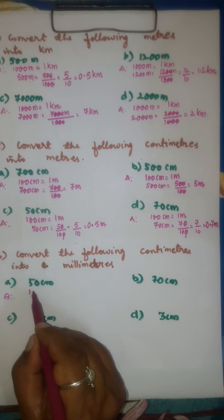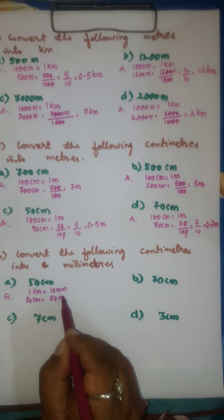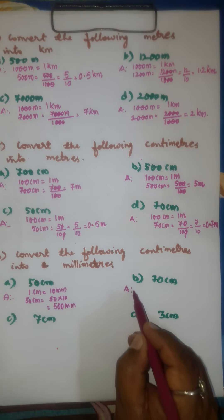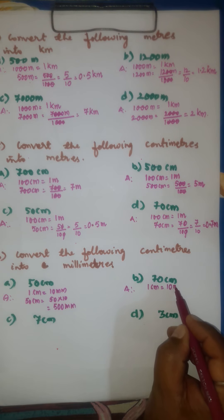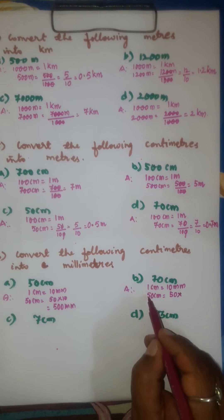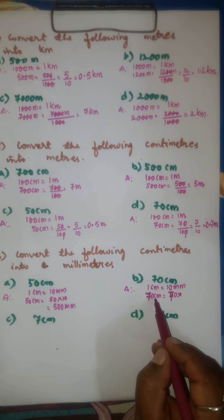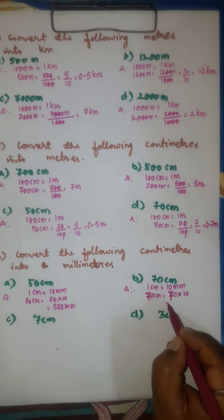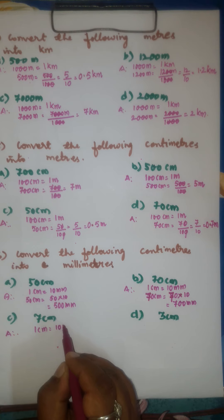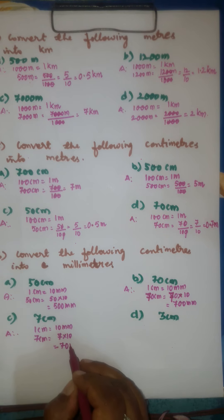Now converting centimeters to millimeters: we know that 1 centimeter is equal to 10 millimeters. Therefore, 50 centimeters is equal to 50 into 10, that is 500 millimeters. For the second one, 70 centimeters is equal to 70 into 10, that is 700 millimeters. And 7 centimeters is equal to 7 into 10, that is 70 millimeters.